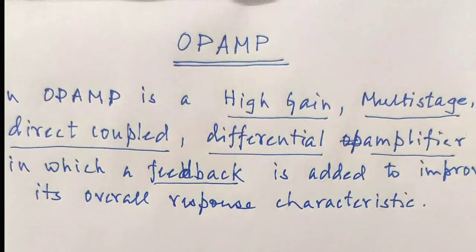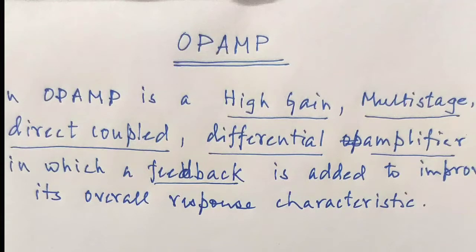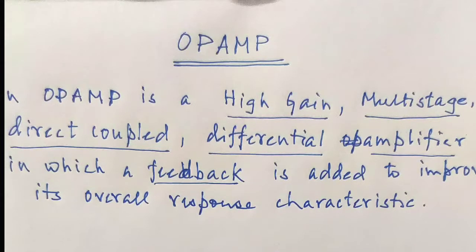In this definition there are different words which should be explained: high gain, multi-stage, direct coupled, differential amplifier, and feedback. Starting with high gain — op-amp stands for operational amplifier, so it is an amplifier. Every amplifier provides some gain, and an op-amp is a very large gain amplifier. Typically the gain of an op-amp is nearly 10 to the power 4 to 10 to the power 5.